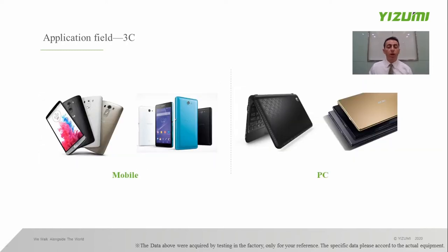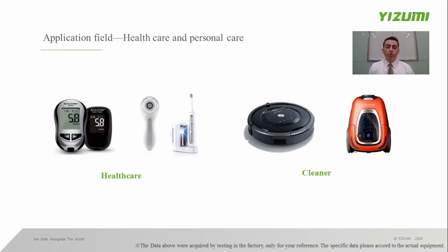IMD process is also widely used in the 3C fields. In particular, IMD process is applied for the rear panel of the handset, and in the laptop, IMD process is also used for upper and lower covers. It's also used for healthcare and personal care — for example, IMD process is used in the heartbeat tester, on the surface of the domestic cleaner, steamer, and the vacuum cleaner.